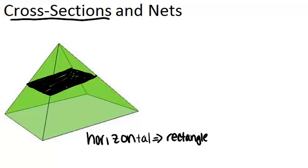But it's possible to take another cross-section and cut it a different way in order to get a different shape for a cross-section. The horizontal cross-section was a rectangle. But what if instead we wanted to think about the vertical cross-section?